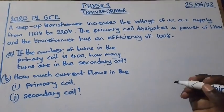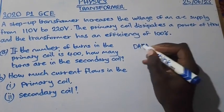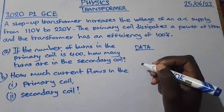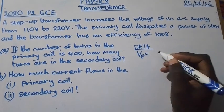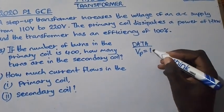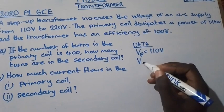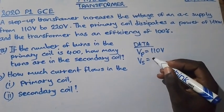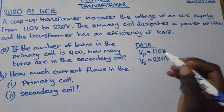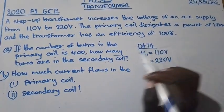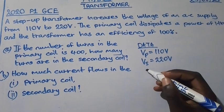So let's extract the data. VP, the voltage passing through the primary coil, is 110V. VS, the voltage passing through the secondary coil, is 220 volts. And we are dealing with an ideal transformer which has efficiency of 100%.